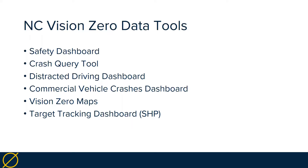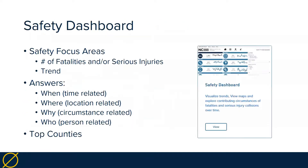You can find all the tools on the NC Vision Zero website under the data and analytics link. The first tool I'm going to demonstrate is the Safety Dashboard. Its purpose is to take the focus areas important to traffic safety — such as pedestrian, speeding, seat belts, etc. — and show how they are doing. It gives the plain number of fatalities and serious injuries as well as showing the trend, and also tries to answer the questions: when, where, why, and who. We also added a tab showing the top counties ranked by fatalities.